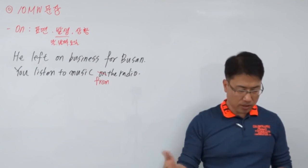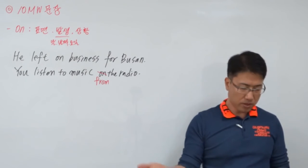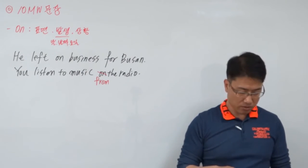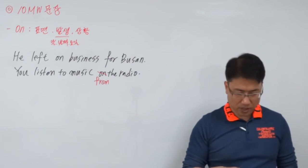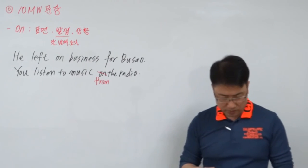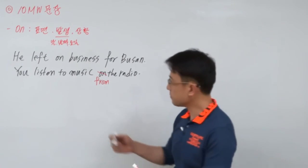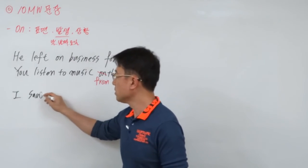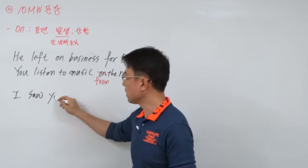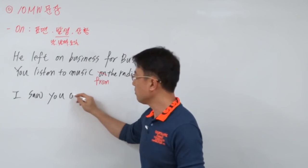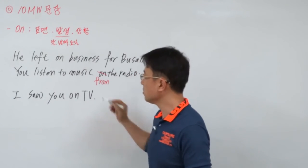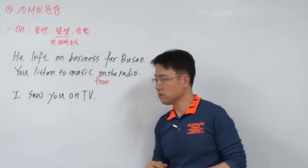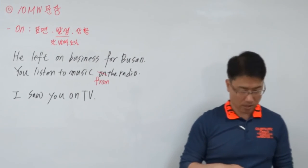On TV — 상황이 TV 상황이에요. 아니면 표면인데 TV 표면이에요, 이렇게 이해하셔도 되고요. I saw you on TV — 내가 너 봤다. 상황은 TV 상황이다. TV에서 너 봤어 이런 표현인데 이렇게 이해를 하시면 되겠습니다.